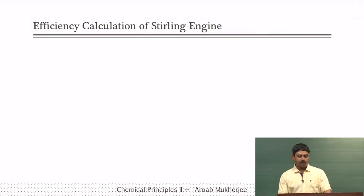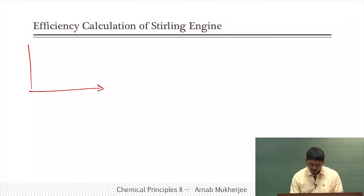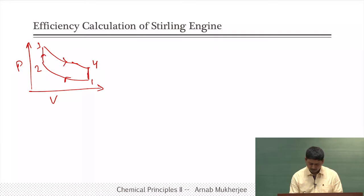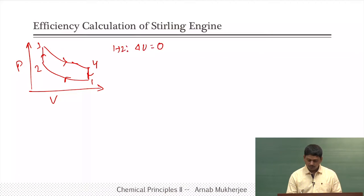Now we are going to calculate the efficiency of the Stirling engine. On the PV diagram there are isothermal and isochoric steps: one, two, three, and four. In step one to two, isothermal compression gives ΔU = 0 and Q₁ = −W = NRT_L ln(V₂/V₁).